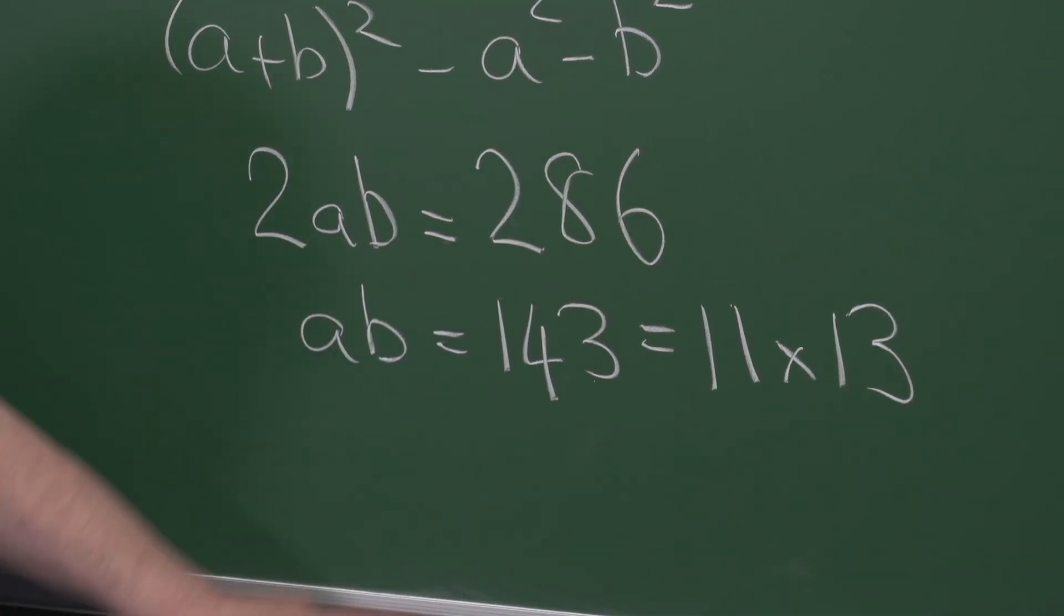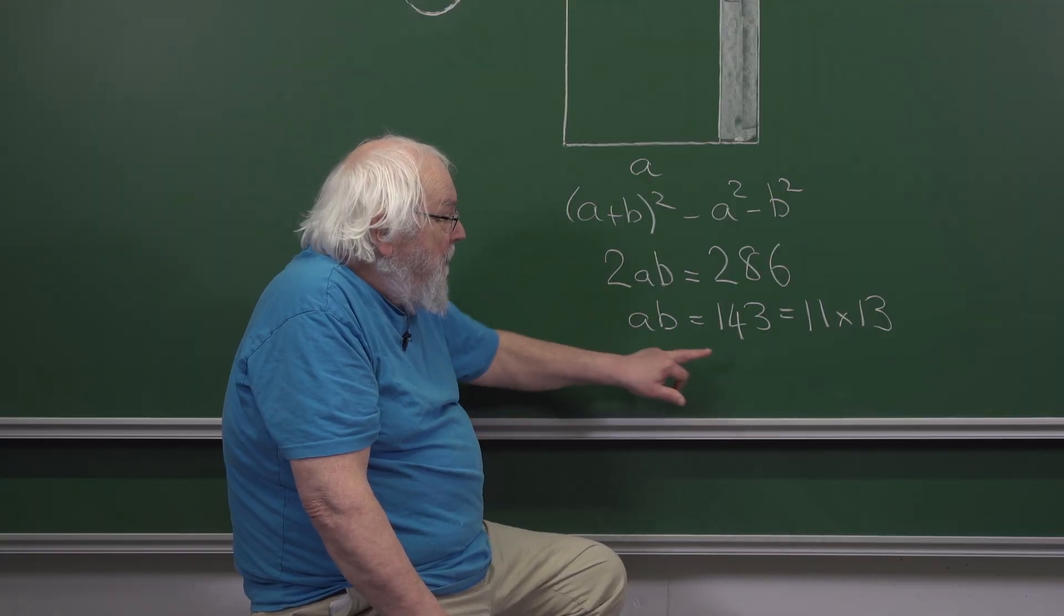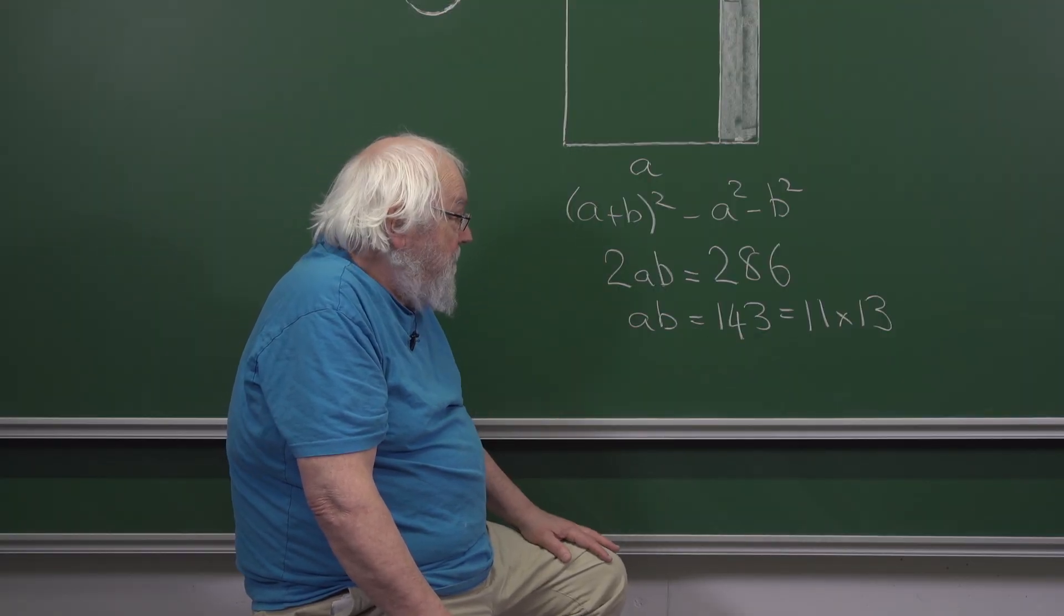There's a clever way of doing that by saying 143 is 144 minus 1 and using the difference of two squares. But never mind, no matter how you do it, AB is 11 times 13.